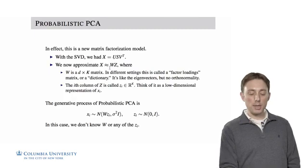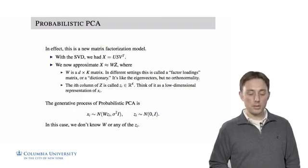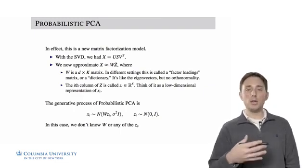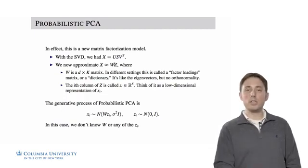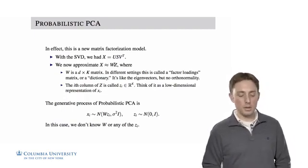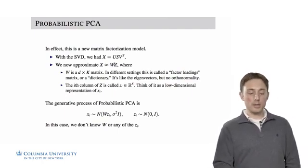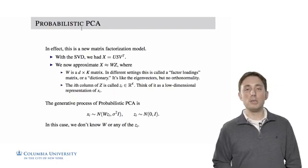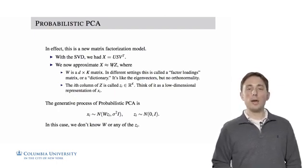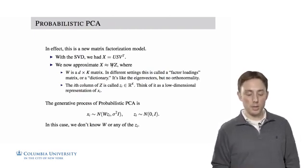Now we're going to say that X is approximately equal to W times Z where W is a D by K matrix. D is the dimensionality of the data. K is the number of eigenvalues and eigenvectors that we want to learn. In this setting we can call W something else. We'll call it a factor loading matrix or dictionary. However, we're also going to relax the constraint that W has to be orthonormal. The columns don't have to have unit length and they don't have to be orthogonal to each other. That's a significant relaxation we're going to make.